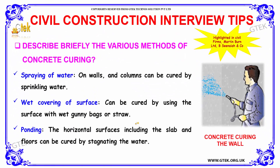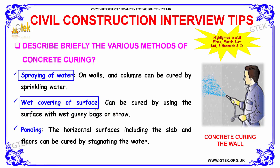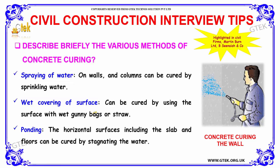Describe briefly the various methods of concrete curing. Some of the methods include spraying of water, wet covering of surface, and ponding. Walls and columns can be cured by sprinkling water directly on the surfaces.